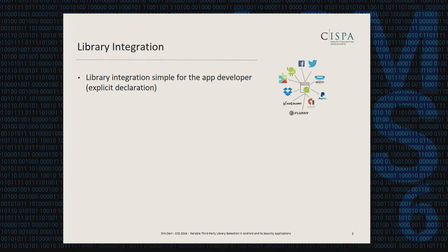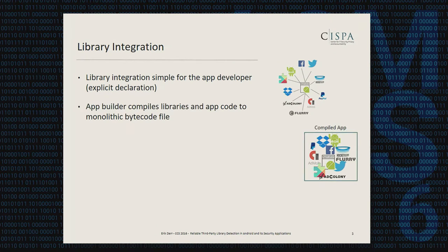Before talking about the actual detection of libraries, let me briefly tell you how libraries are integrated into applications. For the app developer, integrating a library is quite simple — in a developer IDE, they explicitly declare which library and version to include. But in the process of generating the final application, this explicit mapping gets lost when third-party library code and application code is compiled to a monolithic bytecode file.